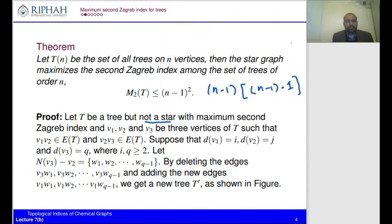Let T be a tree with maximum second Zagreb index, and let v1, v2, v3 be vertices of T such that v1v2 and v2v3 are edges of T. Suppose the degree of v1 is i, degree of v2 is j, and degree of v3 is q, where i and q are greater than or equal to 2. The neighborhood set of v3 other than v2 is {w1, w2, ..., w_{q−1}}, since the degree of v3 is q.